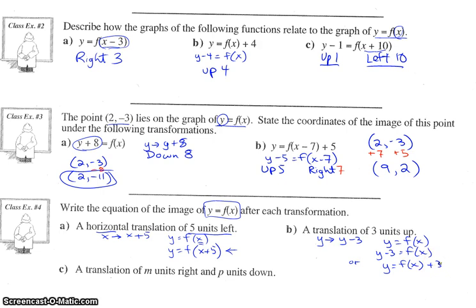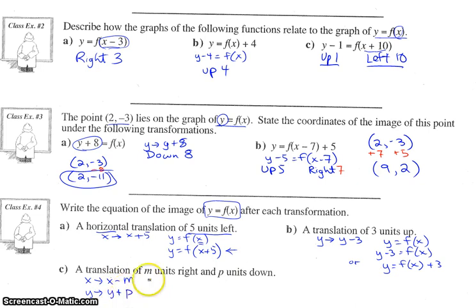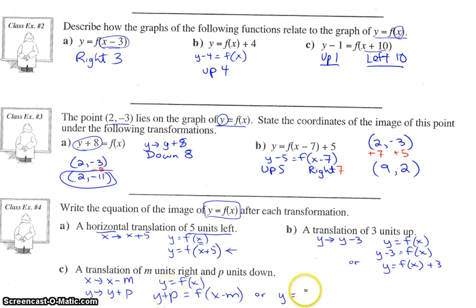Part c is a generic translation — m units right and p units down. For m units right, that's x, so x gets replaced with x minus m. For p units down, y gets replaced with y plus p. Taking our original equation y equals f of x, scoop out y and put in y plus p; scoop out x and put in x minus m. You could also rearrange and get y by itself by subtracting p over to the other side. Don't let the variables freak you out — they work just like numbers.